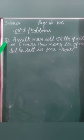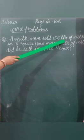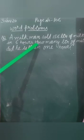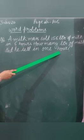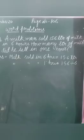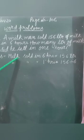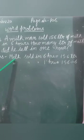Question number 2: A milkman sold 156 liter of milk in 6 hours. How many liter of milk did he sell in 1 hour? The answer is, you have to write the statement. Milk sold in 6 hours is 156 liters. How many liter of milk is sold in 1 hour?